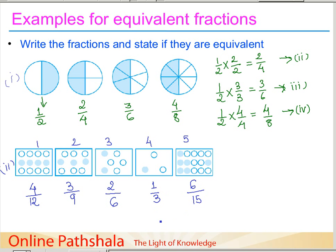Now I want to find out whether these are all equivalent or not. What we do is take a fraction for which there is no common factor between the numerator and denominator. In this case, that fraction is 1 by 3 — it has no common factor other than 1. We will try to multiply both the numerator and denominator of 1 by 3 by the same number and see if we can achieve any of the fractions from figures 1, 2, 3 and 5.